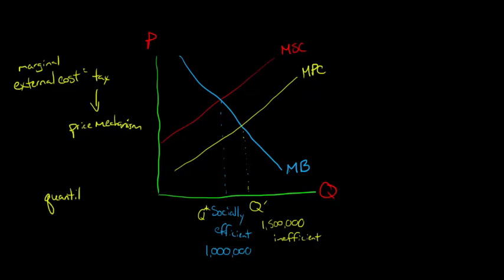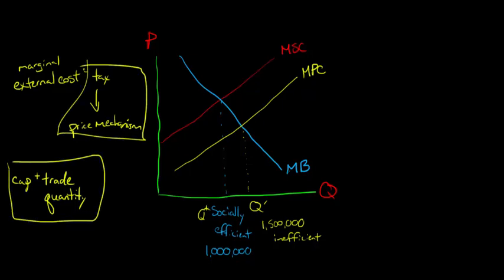Cap and trade, we're setting the quantity and then allowing price to adjust through the sale of the marketable permits. But with the Pigouvian tax, we're using a price mechanism, and then the quantity will naturally adjust as firms change their behavior based on the fact that they're internalizing the social cost. But in theory, both the corrective tax and the cap and trade, the system of marketable permits, both lead to the socially efficient equilibrium.